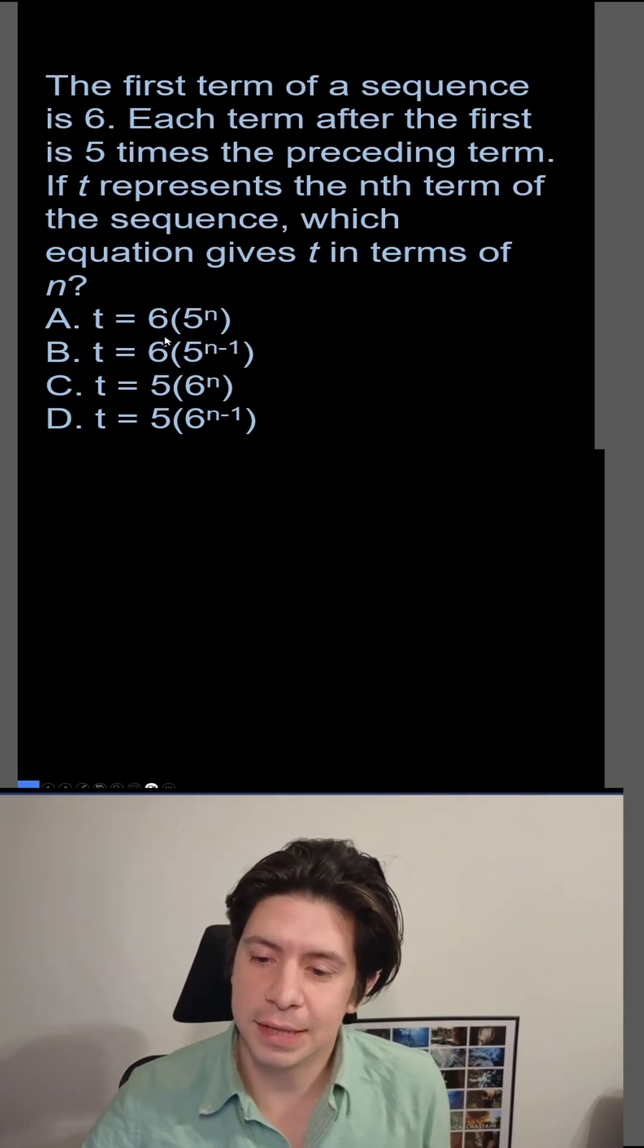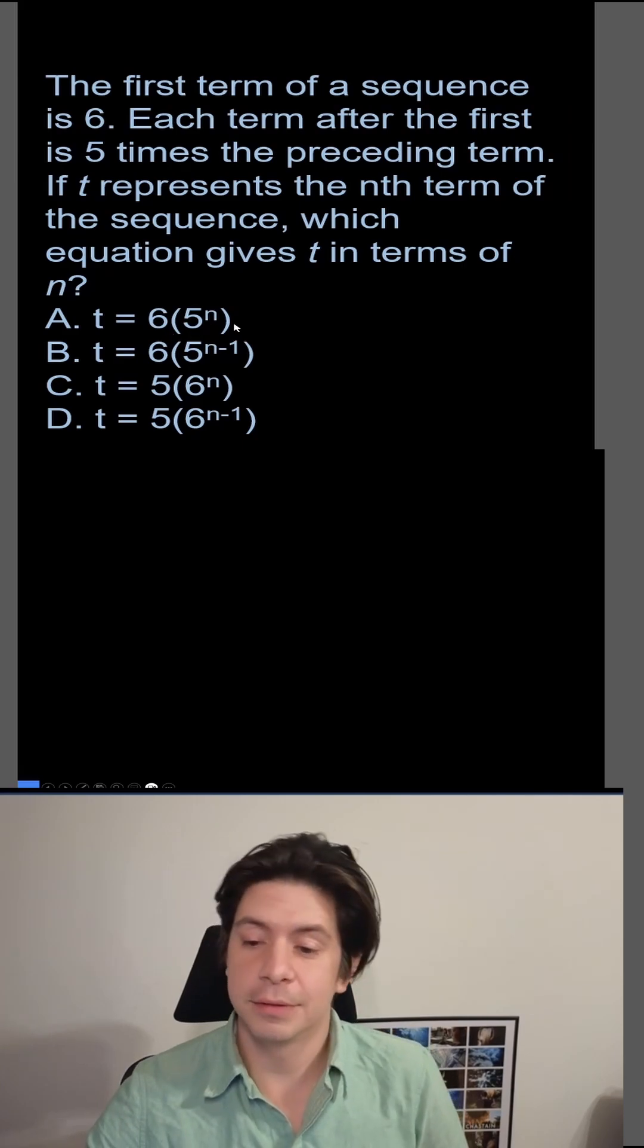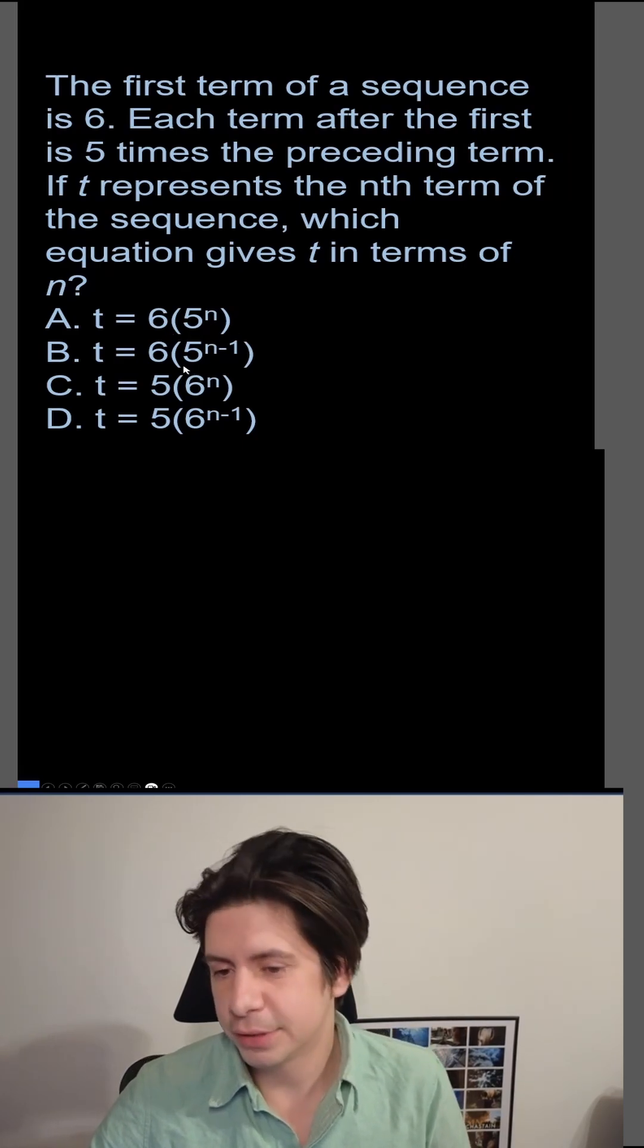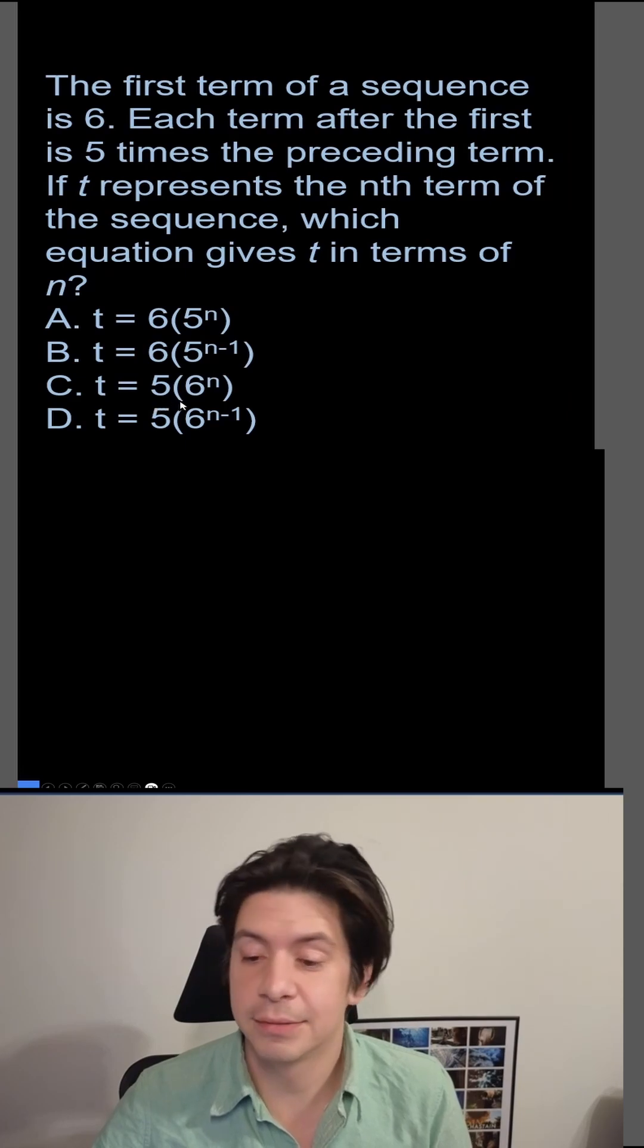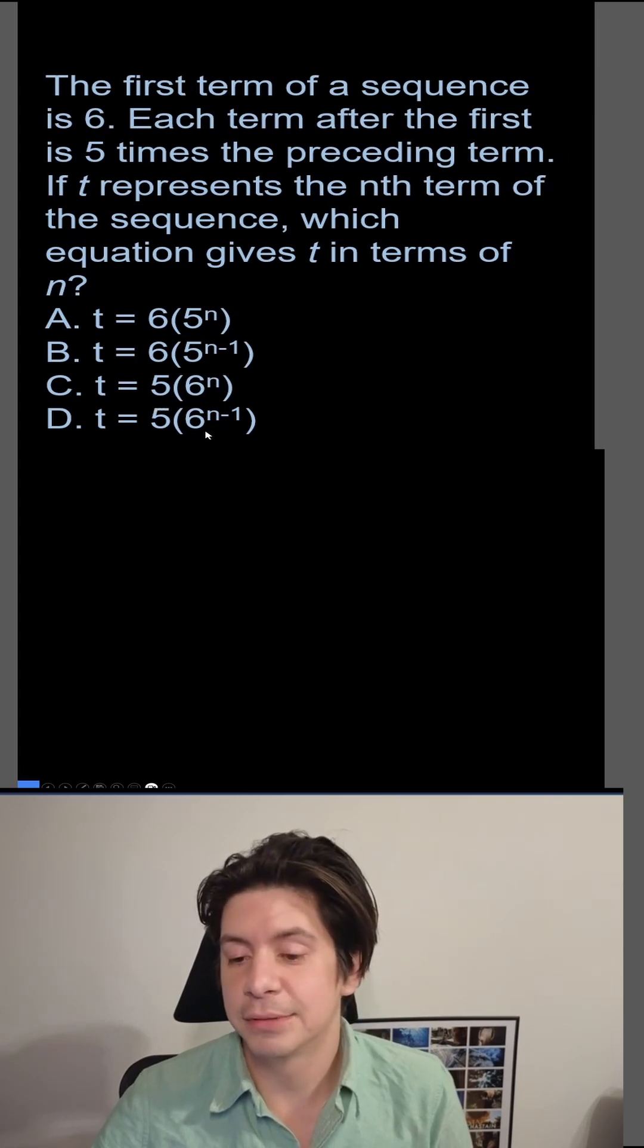And then you're given four choices. A equals t equals 6 times 5 to the n, B equals 6 times 5 to the n minus 1. The next one is 5 times 6 to the n, and 5 times 6 to the n minus 1.